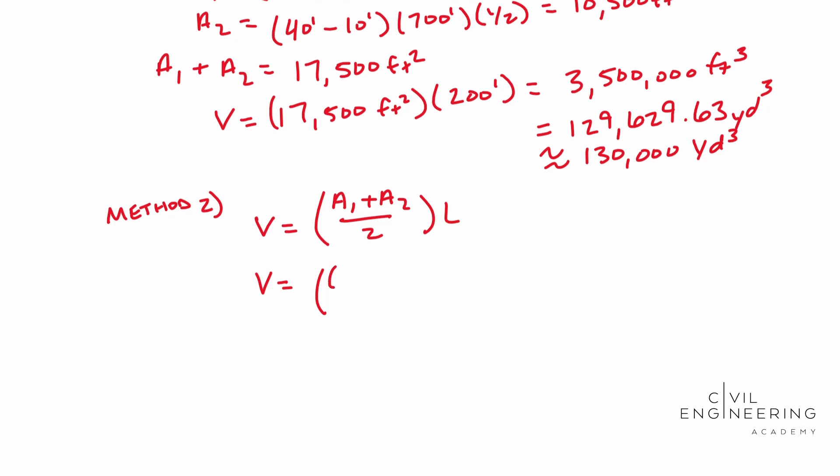And so if we're going to do that, we're going to end up with 10 feet times 200 feet plus 40 feet times 200 feet. And you may be wondering why I'm doing it the way that I'm doing it right now. I'll explain here in a minute. That's feet, two times our length of 700 feet.